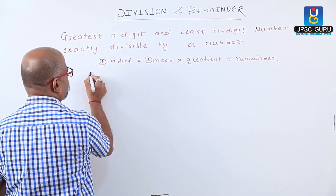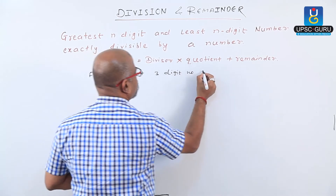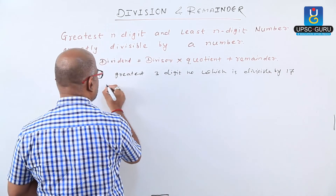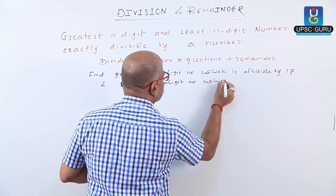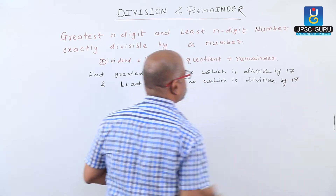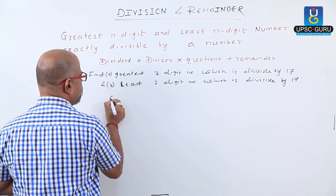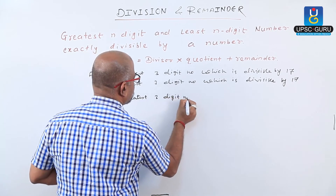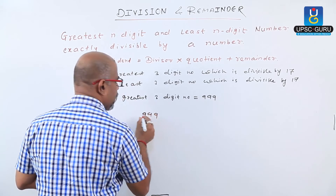Let us check the example. Find the greatest three-digit number which is divisible by 17, and the least or smallest three-digit number which is divisible by 17. For part A, the greatest three-digit number is 999. Let us divide 999 by 17.